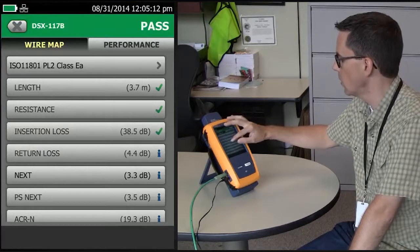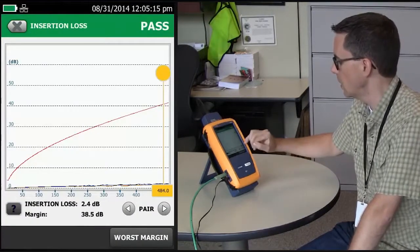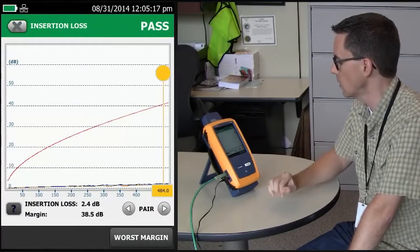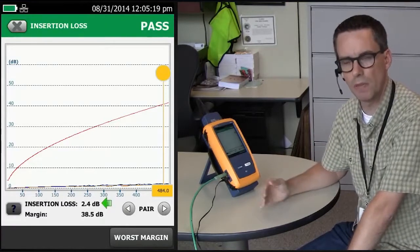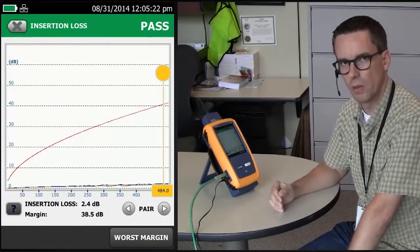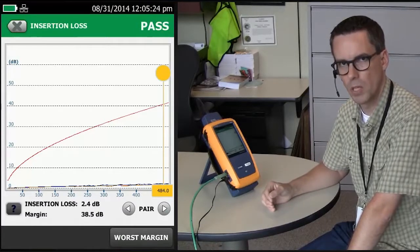When we look at this near-end crosstalk, we see that the entire limit line is black, so the entire measurement is ignored. If we go and look at the insertion loss, we can see here that it reported the worst case as 2.4 dB, not even close to 4 dB, so it's ignoring all of the crosstalk measurements.